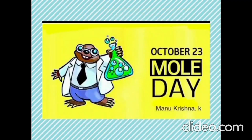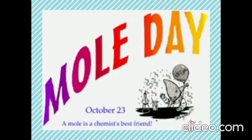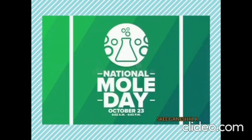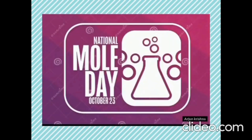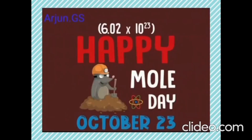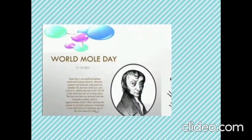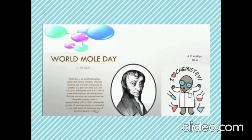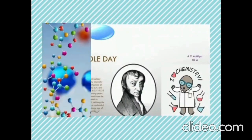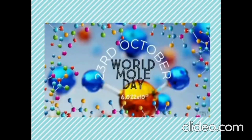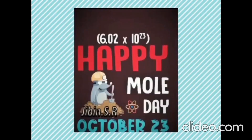For example, the water molecule has a molar mass of 18. Therefore, 1 mol of water weighs 18 grams. Similarly, a mol of neon has a molar mass of 20 grams. In general, 1 mol of any substance contains Avogadro's number of molecules or atoms of that substance.